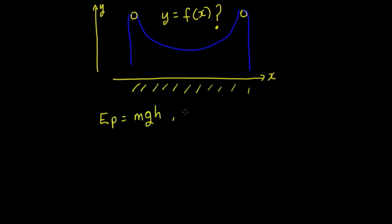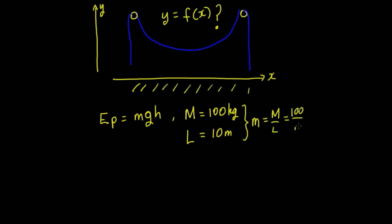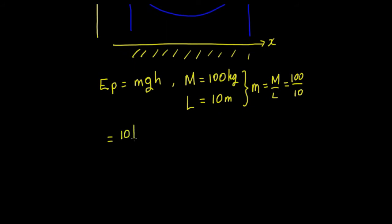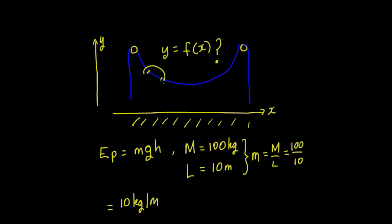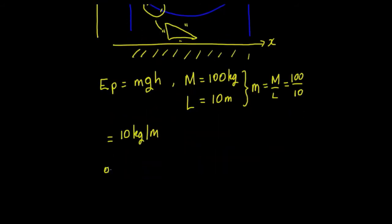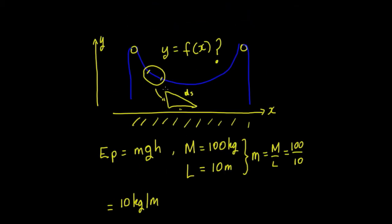The rope hangs in such a manner as to minimise the gravitational potential energy, where gravitational potential energy is mgh. Let's imagine the total mass is 100 kg and the length is 10 metres, so the mass per unit length would be 100/10, which equals 10 kilograms per metre. That would be the mass of a small element dm, which we can draw as a little triangle with dx, dy, and ds.